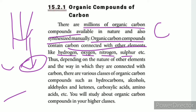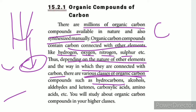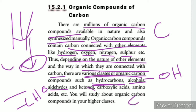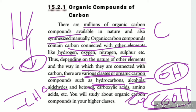Depending on the nature of the element, carbon is connected. We have organic compounds in various classes. Hydrocarbon is a variety of organic compound. Hydrogen and carbon form hydrocarbons. Alcohol is a compound. Aldehyde is a compound with C, H, and O. Carboxylic acid has the functional group COOH.